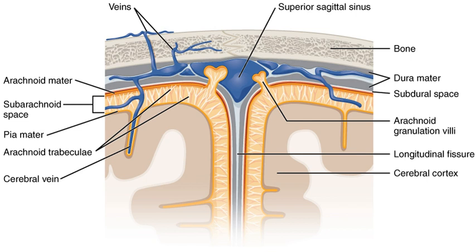The middle element of the meninges is the arachnoid mater, so named because of its spider-web-like appearance. It cushions the central nervous system. This thin, transparent membrane is composed of fibrous tissue and, like the pia mater, is covered by flat cells also thought to be impermeable to fluid. The shape of the arachnoid does not follow the convolutions of the surface of the brain and so looks like a loosely fitting sac. In the region of the brain, a large number of fine filaments called arachnoid trabeculae pass from the arachnoid through the subarachnoid space to blend with the tissue of the pia mater.